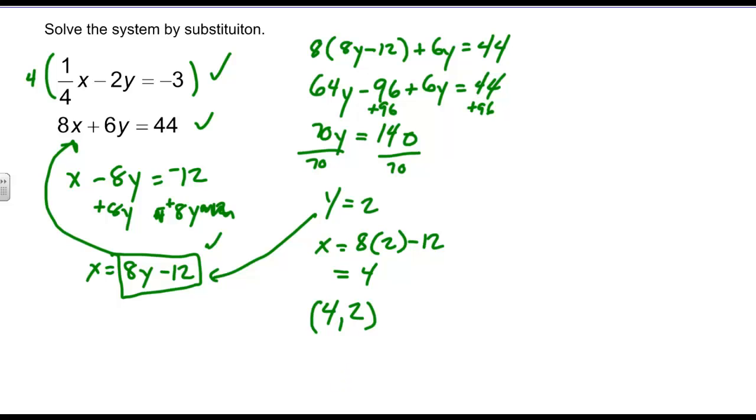And again, I'm going to go ahead and check just to do this every once in a while. Let's do it in the top equation. 1/4 times 4 minus 2 times 2, hopefully it's going to equal negative 3. This is 1 minus 4, and that equals negative 3. So that's a check. Then I've got 8 times 4 plus 6 times 2, hopefully it will equal 44. This gets me 32 and 12, and yep, it checks out.